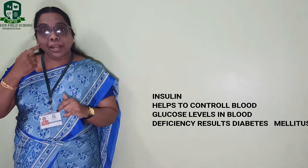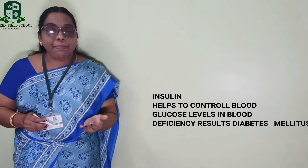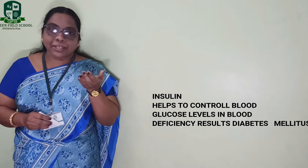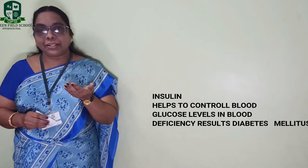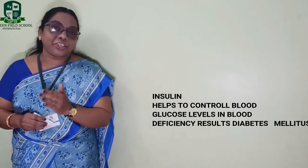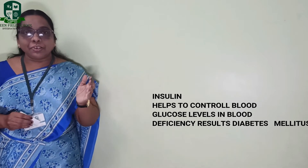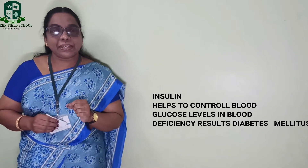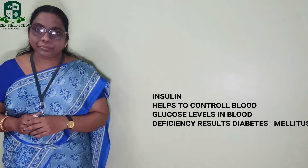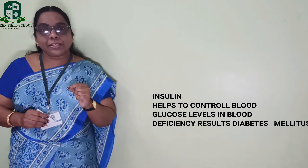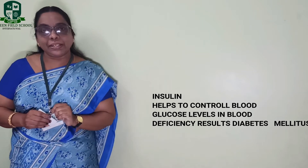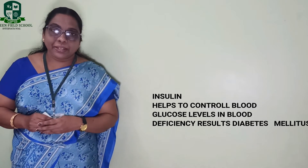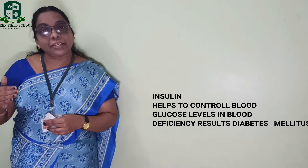If there is no insulin, what will happen? The sugar level — that is, the glucose in the blood — will increase. Glucose or sugar levels in the blood will rise without conversion into energy products. Whenever the blood sugar rises like that, there is a chance for the excretion of glucose along with urine. That particular condition is called diabetes, and its full name is diabetes mellitus.